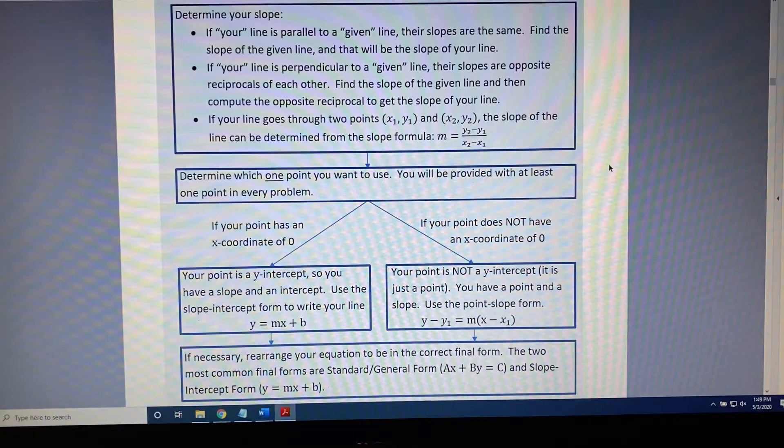Another possibility is that your line needs to be perpendicular to a given line. If that's true, then their slopes are opposite reciprocals of one another. So, find the slope of the given line, and then compute the opposite reciprocal to get the slope of your line.